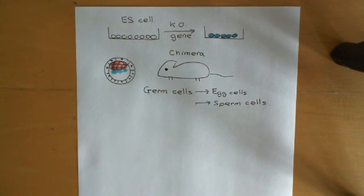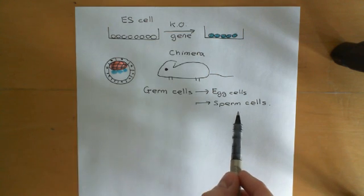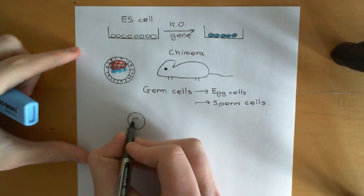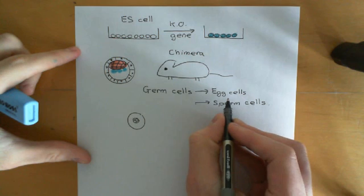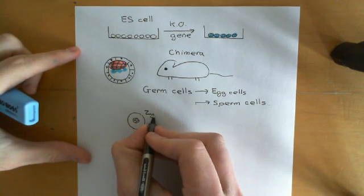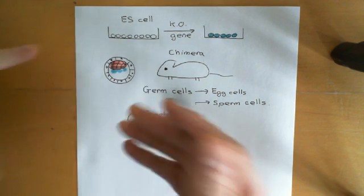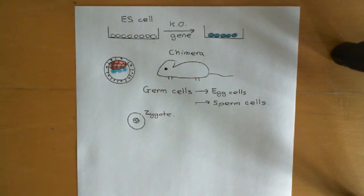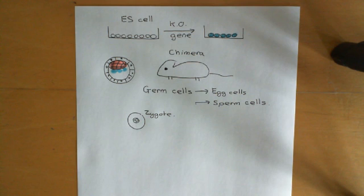You fertilize the egg cell that has no copies of the gene with the sperm cell that also has no copies of the gene, and finally you have a zygote with no copies of the gene at all. You place this inside a mother mouse and it develops into a mouse that has no copies of the gene in any of its somatic cells — your knockout mouse. Knockout mice are used to investigate the functions of a huge number of proteins: you knock out the gene, see what goes wrong, and that gives you clues about where the protein is important.